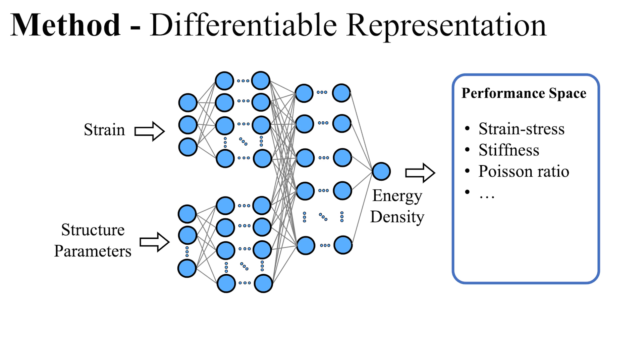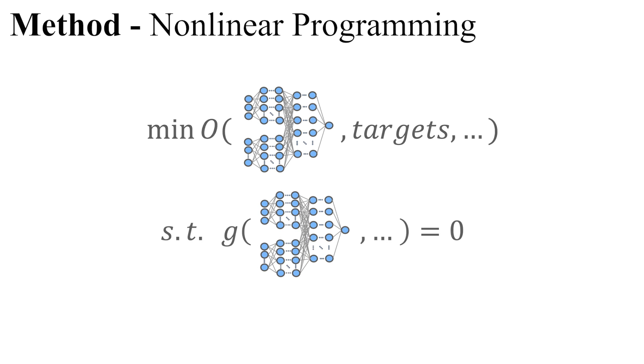With a smooth map from parameter to performance space that is fully differentiable, we formulate inverse material design as a non-linear programming problem that leverages neural networks for both the objective functions and the constraints.